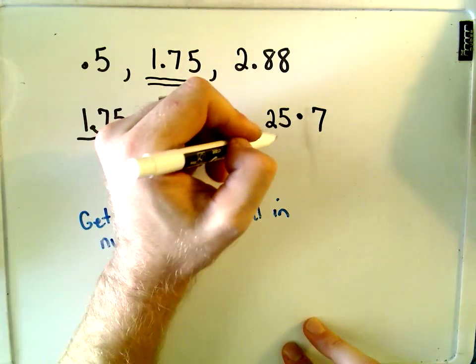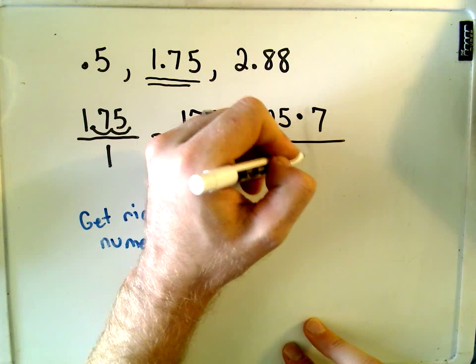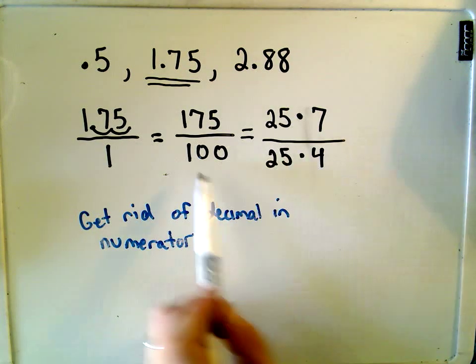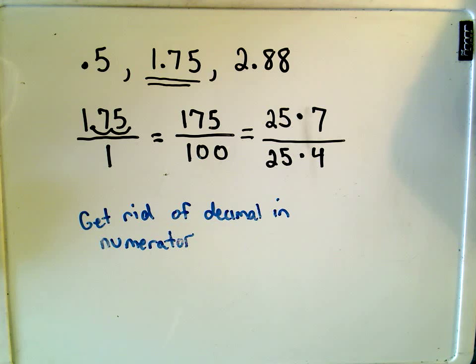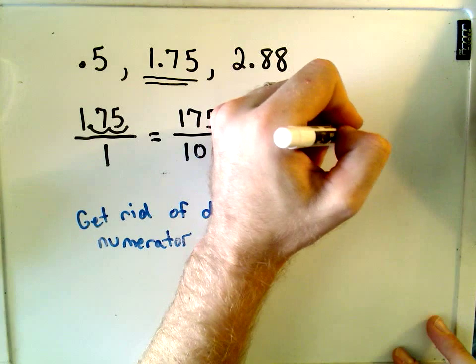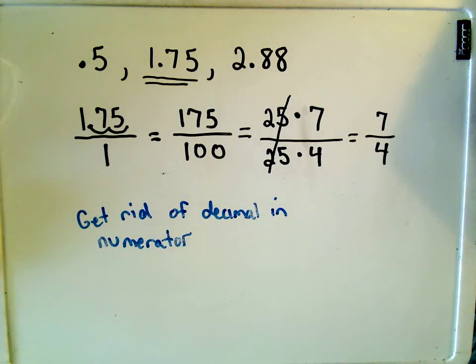Then, how many quarters are in a dollar? There's four quarters in a dollar, so that means 25 times 4 is going to give us 100. And again, same thing, we can just cancel out the 25s, and we're left with simply the fraction 7 over 4. So plug 7 over 4 into your calculator, or better yet, convert it back into a decimal, and you'll see that you get 1.75 back.